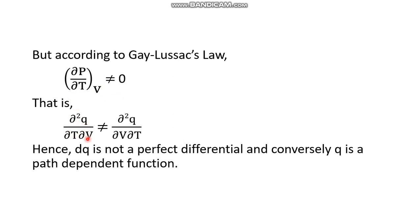Since ∂²q/∂T∂V does not equal ∂²q/∂V∂T, dq is not a perfect differential, and conversely q is a path-dependent function. So we have proved that w is a path function, u is a state function, and q is a path function. That's all for today's lecture. Have a nice day.